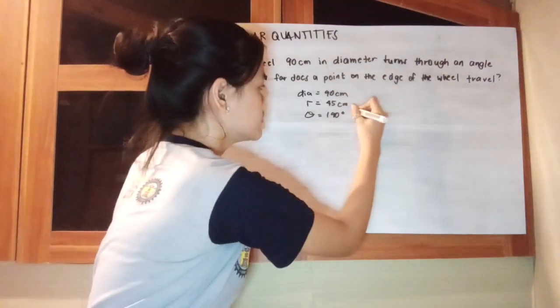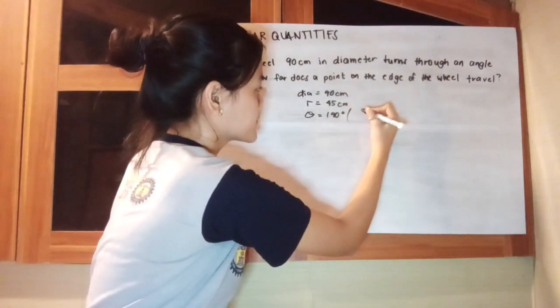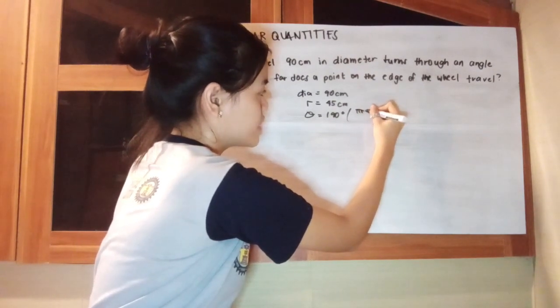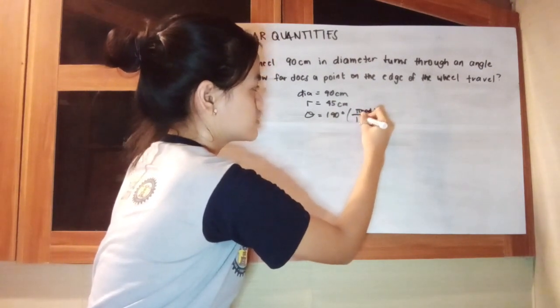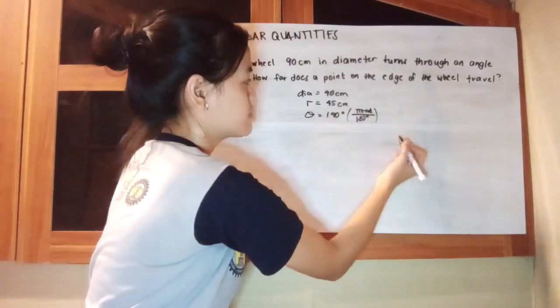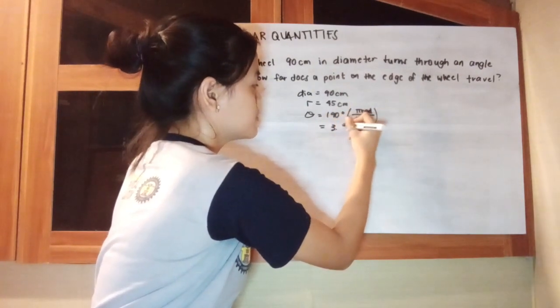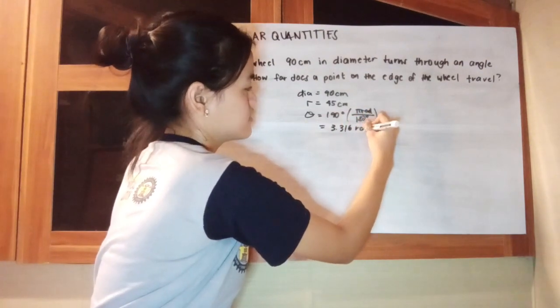So we just have to multiply this. Pi radians is equivalent to 180 degrees, so we have to multiply it by this. And we'll get a result of 3.316 radians.